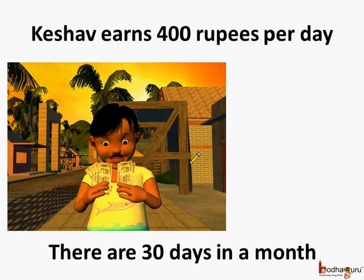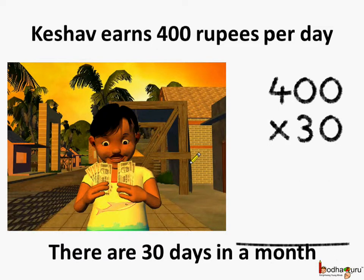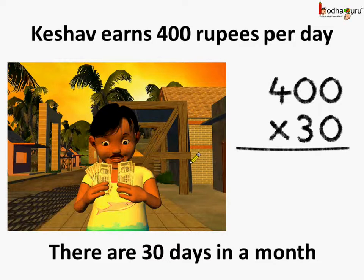We need to multiply 400 by 30. This way we will get the total amount he earned in a month which had 30 days.